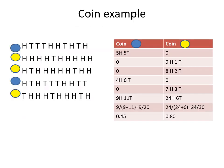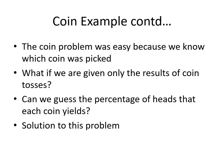When the yellow coin is being tossed, it has nine heads and one tail. Accordingly, we count the number of heads and tails of the blue coin as well as the yellow coin and find out what is the probability of heads in the throw of blue coin, which is nothing but the count of heads upon the total number of heads plus tails which turns out to be 0.45 in this case. Similarly, the counts of heads upon the counts of heads plus tails which turns out to be 0.8 in this case. The coin problem was very easy because we know which coin was picked. What if we are given only the results of the coin tosses? Can we guess the percentage of heads that each coin yields?